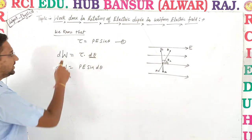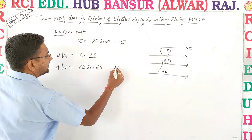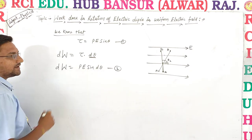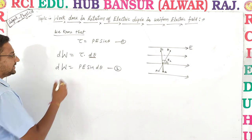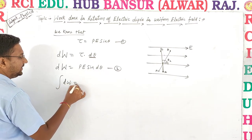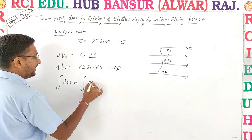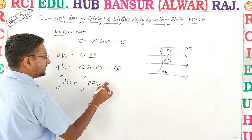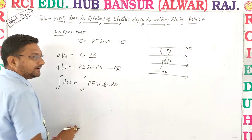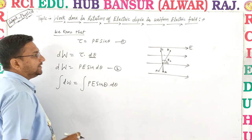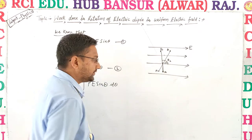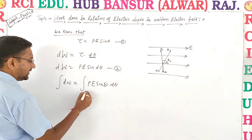So here dW = pE sinθ · dθ, which is equation number two. Taking integration on both sides of equation two, we get: integration of dW = integration of pE sinθ · dθ, with limits theta1 to theta2, since we rotate from theta1 to theta2.